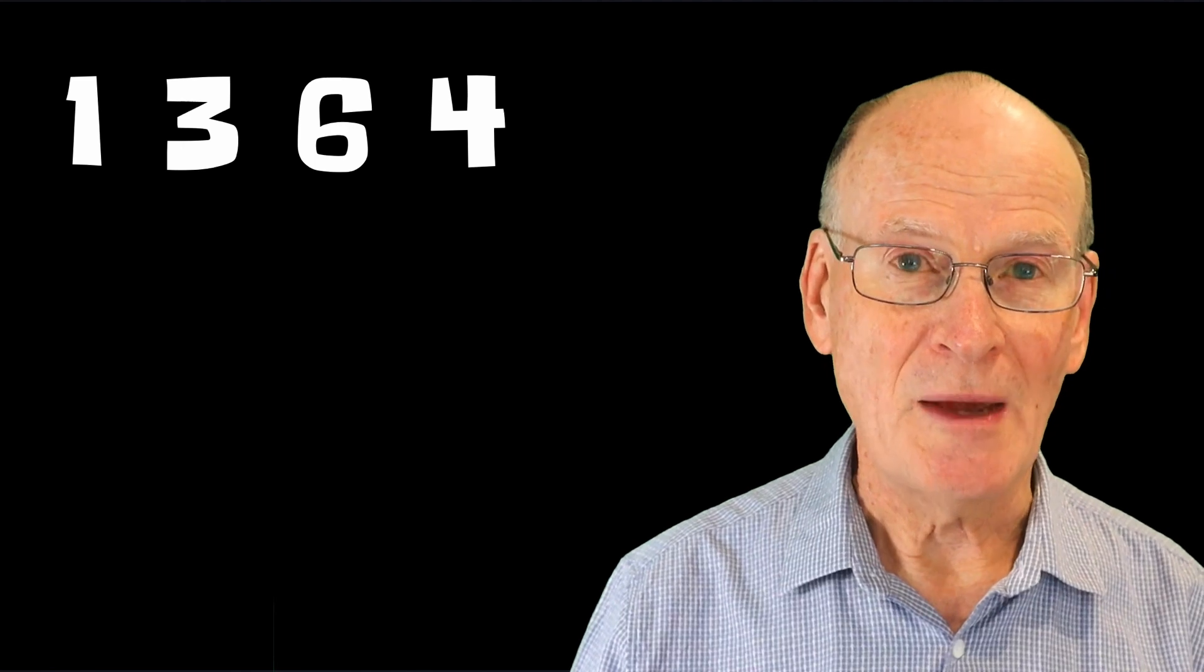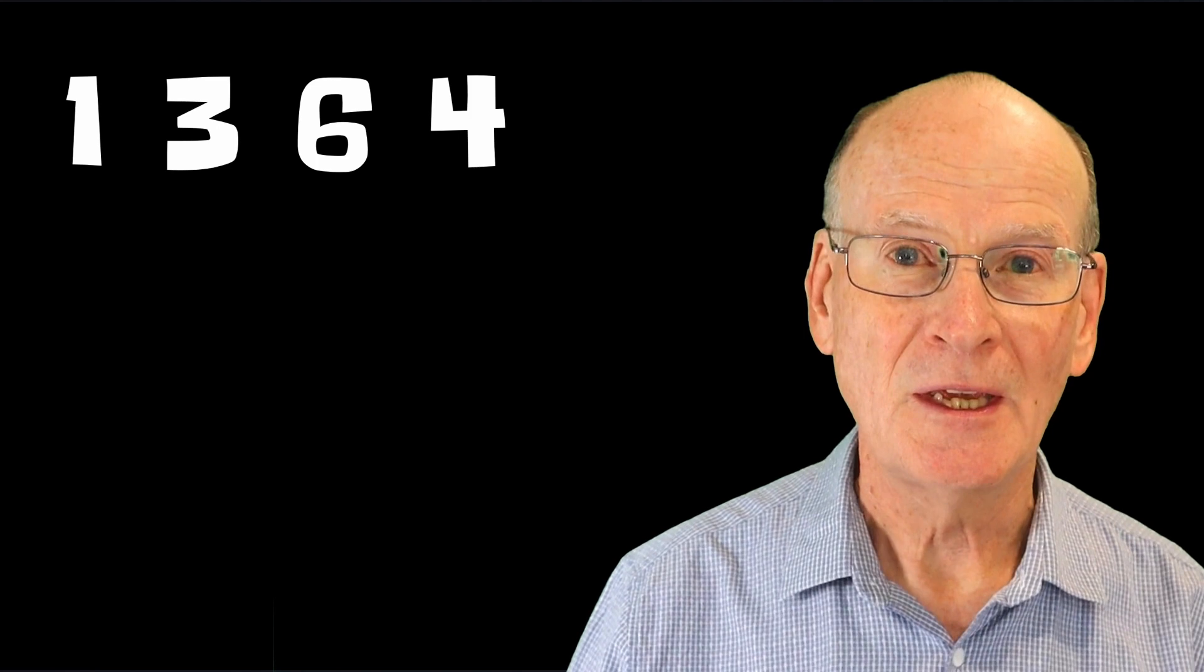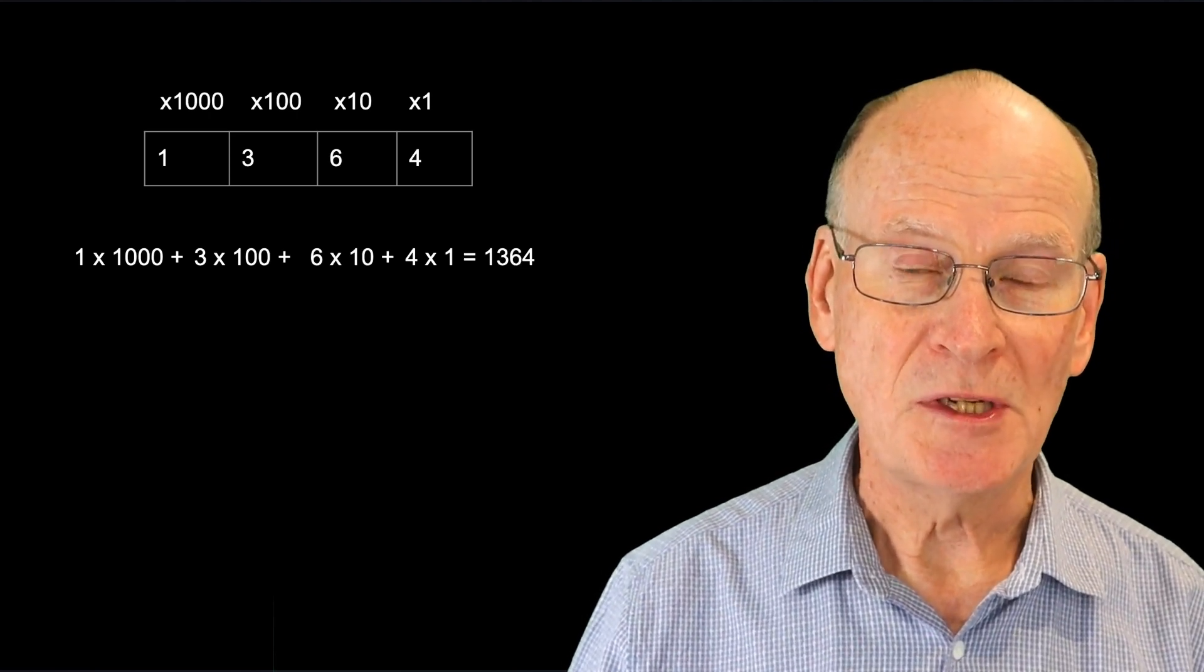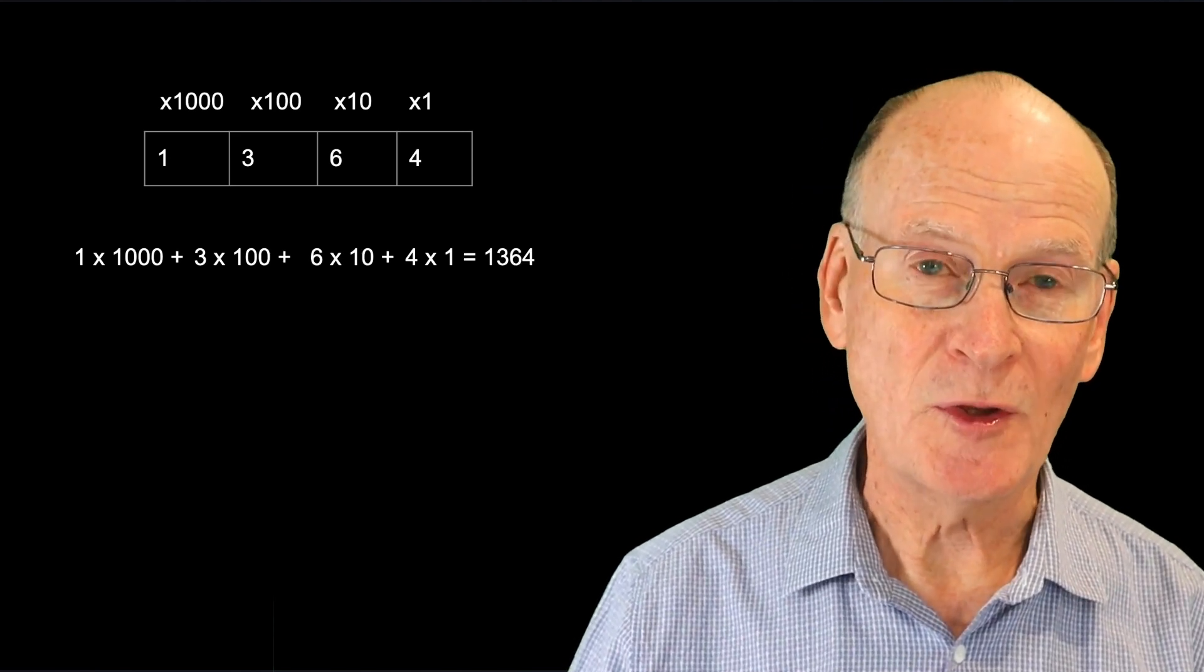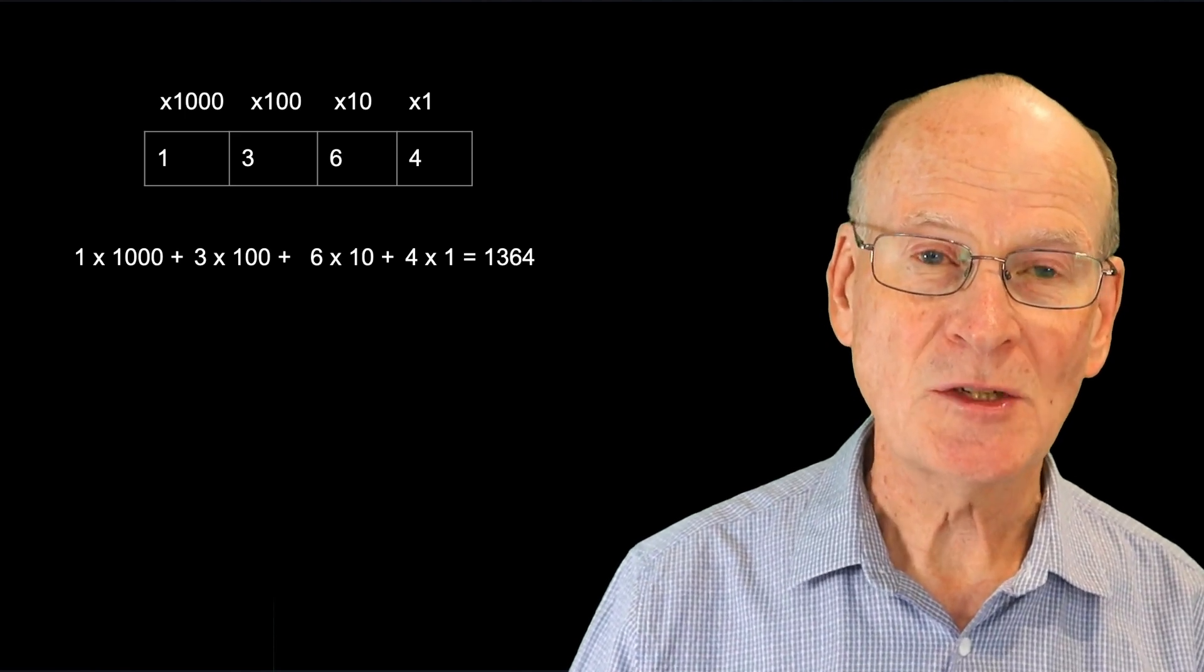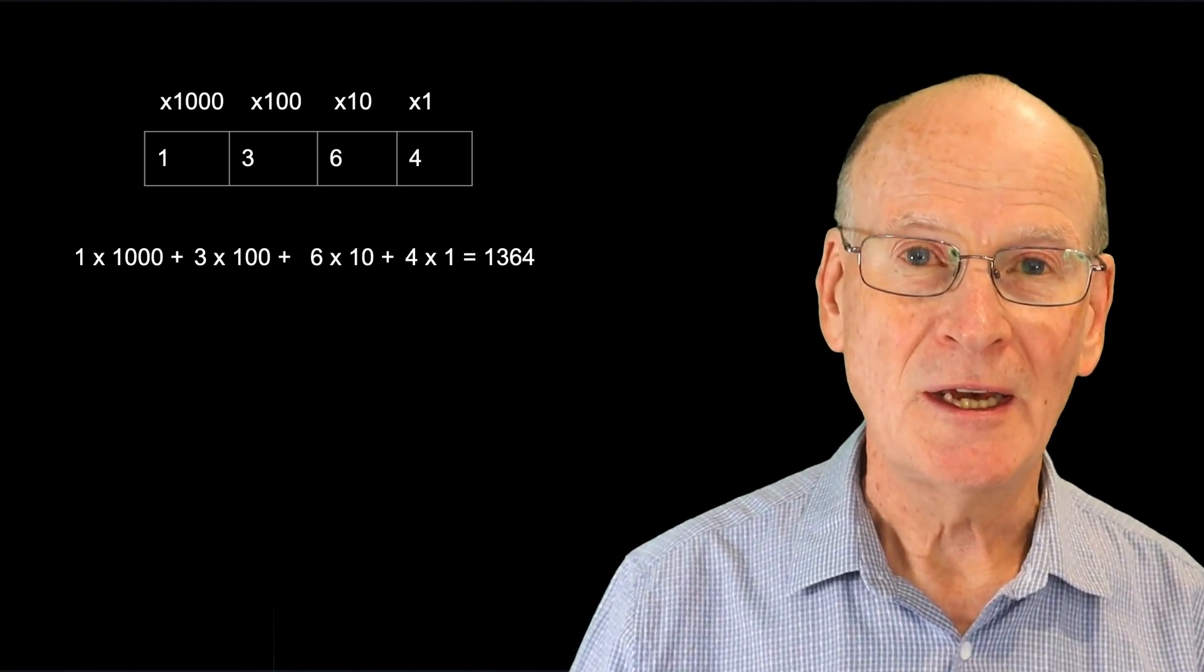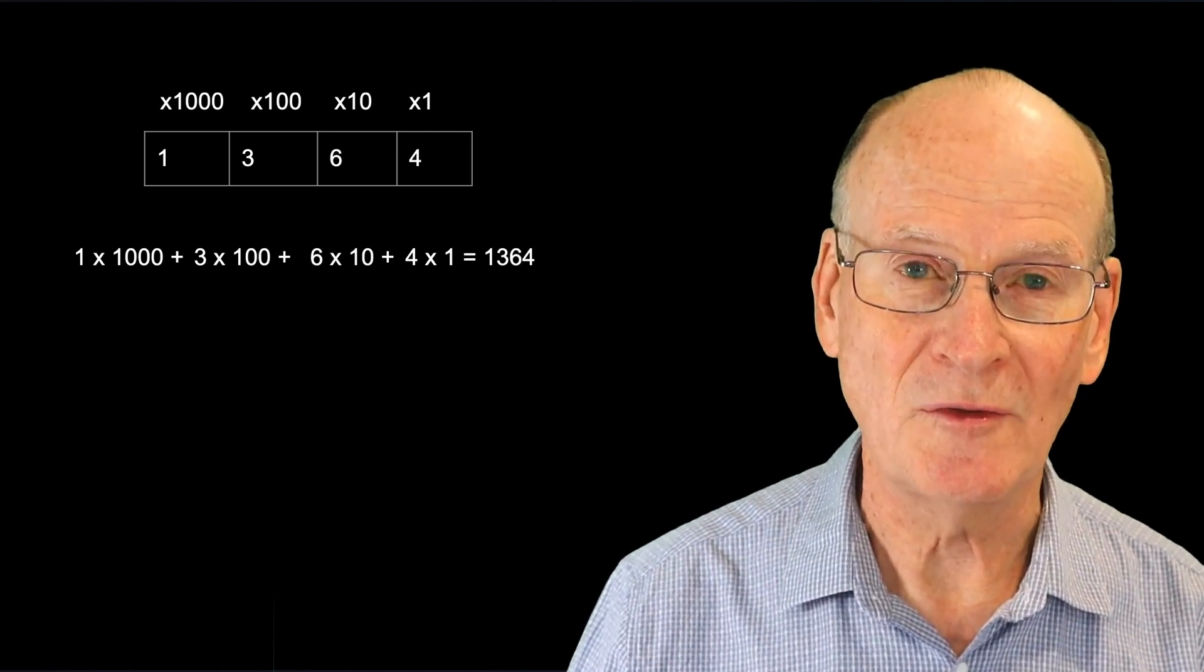So for example, the number 1364. Each position in this number has a weight. The rightmost symbol has a weight of 1, and the second to the right has a weight of 10. The third to the right has a weight of 100, and the leftmost one, the fourth to the right, has a weight of 1000. And this way we can represent a very large value by using a sequence of symbols with understanding what the weights of each position are.